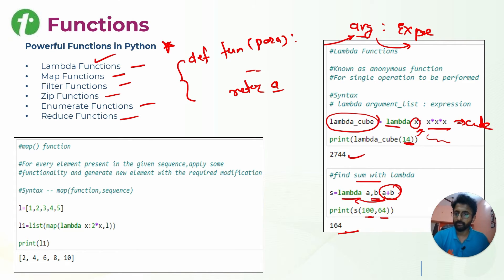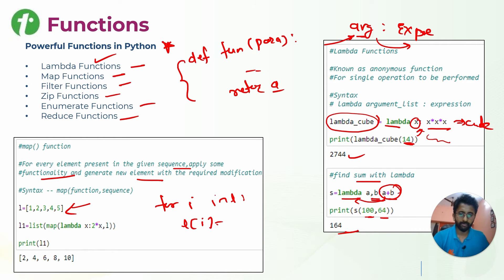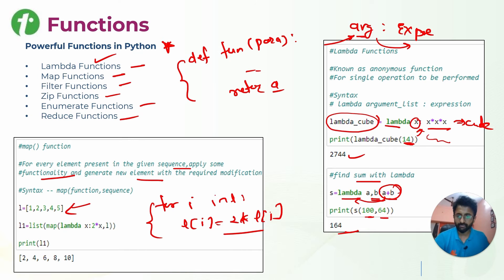Next is the map function. For every element present in a sequence, we apply a certain functionality to generate a new element. For example, we have a list and we want to double each element. In the general way we can apply a for loop. But using map function with a lambda expression, we can do this more concisely.